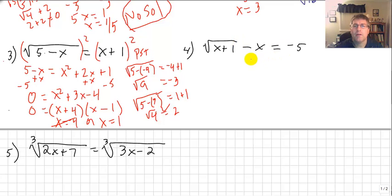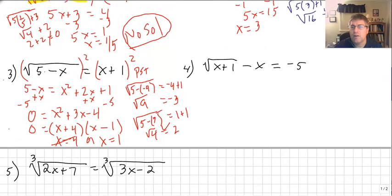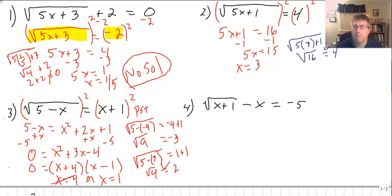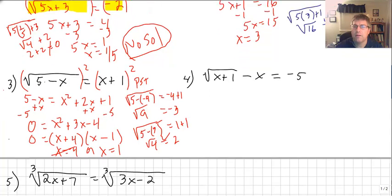Sample number 4 — I'm going to leave that for you to do. It's a combination of what we saw here where we have to strip everything away, and we might have a perfect square trinomial that you'll have to deal with. Bring that one to class.